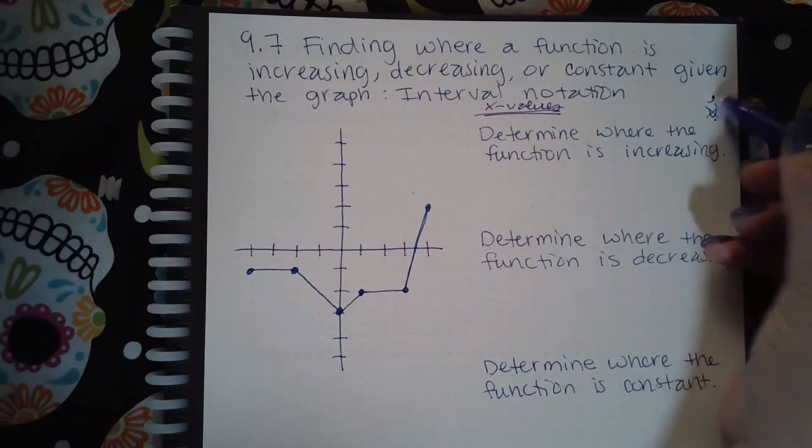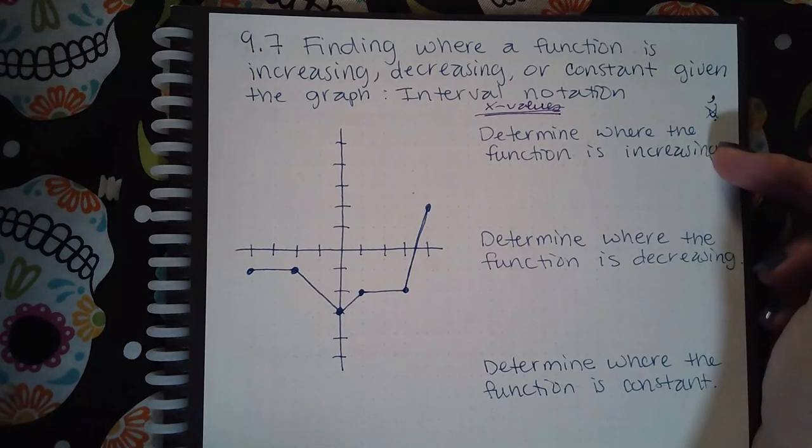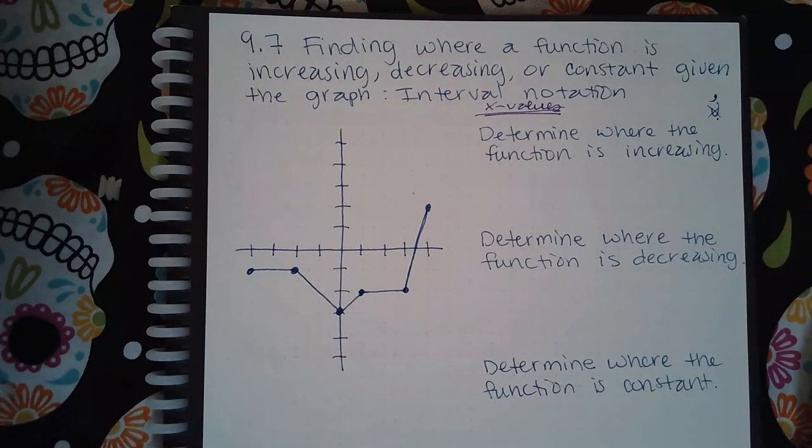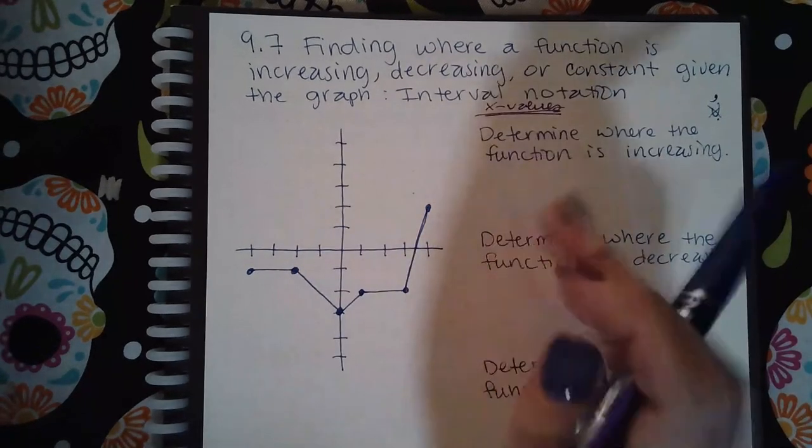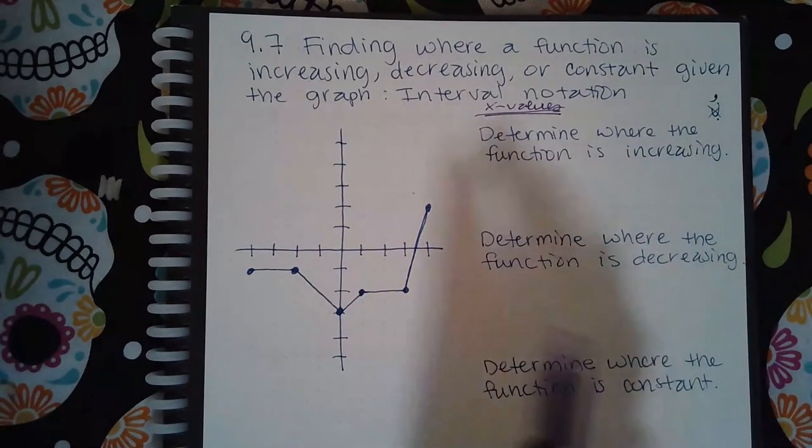Another thing is they're not going to use unions here, they're going to use commas. So if you have two sections where it's increasing, you're going to put a comma in between. I like to label first and then I'll tell them what all the intervals are.